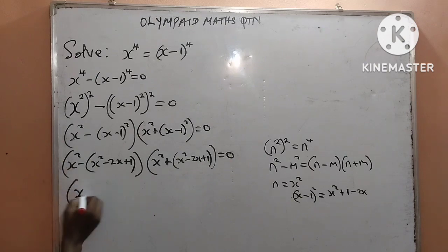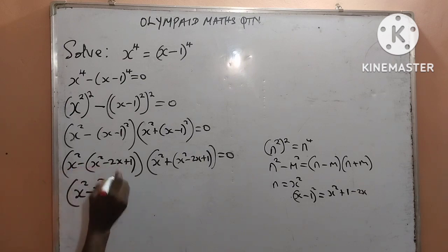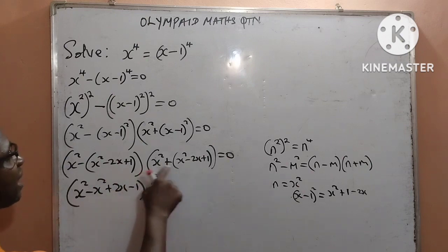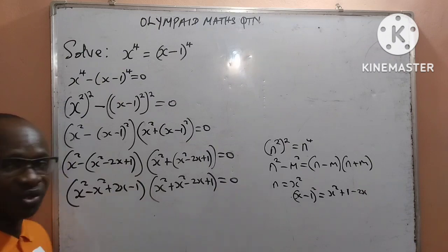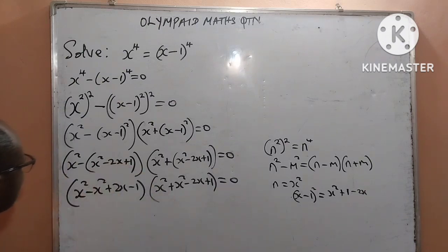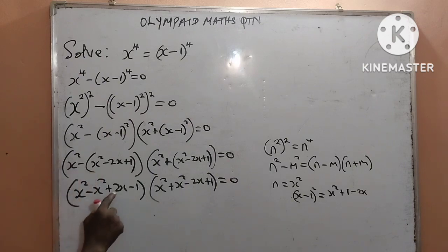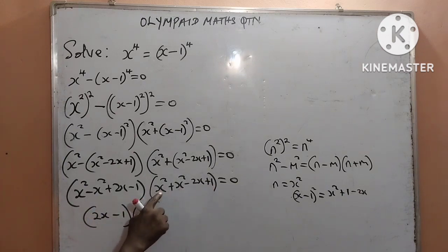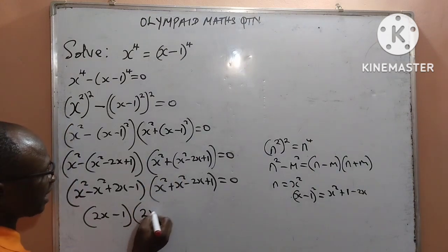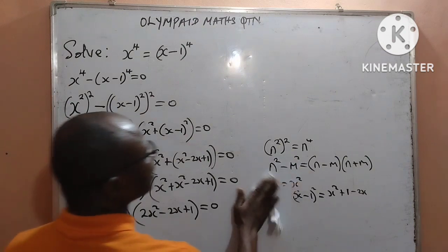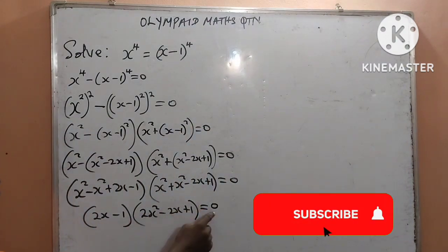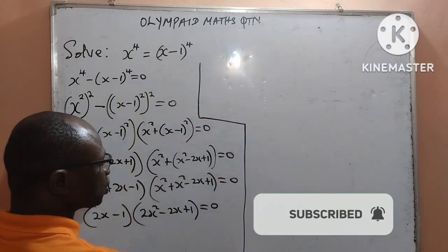Now I want to open the brackets. In the first bracket: x squared minus x squared gives 0, plus 2x, minus 1 — leaving 2x minus 1. In the second bracket, x squared plus x squared gives 2x squared, then minus 2x plus 1. So I now have 2x minus 1, times 2x squared minus 2x plus 1, equal to 0. This means the first bracket equals 0 and the second bracket also equals 0.